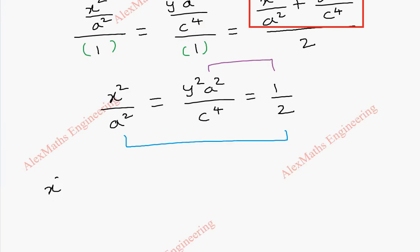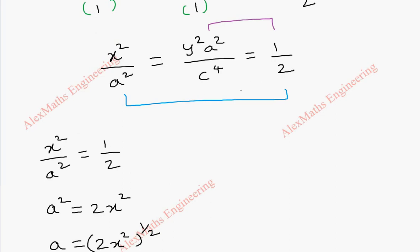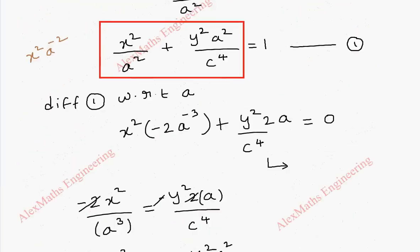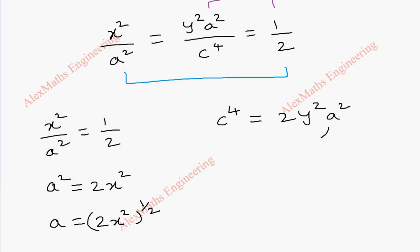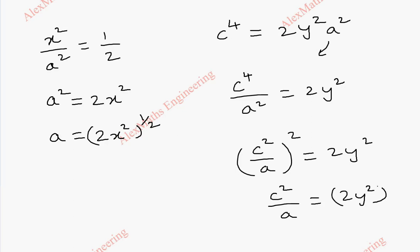Taking the first and last parts: x square by a square equal to 1 by 2. By cross multiplication, a square becomes 2x square, so a equals 2x square whole power 1 by 2. Taking the second and last parts by cross multiplication, c power 4 equal to 2y square times a square. Since b equals c square by a, we get c power 4 by a square equal to 2y square, which is c square by a whole square equal to 2y square. So b equals c square by a equals 2y square whole power 1 by 2.